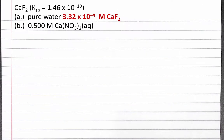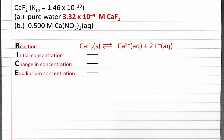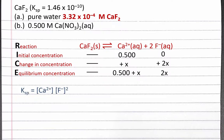Now let's look at how the molar solubility changes when we dissolve calcium fluoride into 0.500 molar calcium nitrate solution based on the common ion effect. We begin with the same RICE table setup, but this time we have an initial concentration of 0.5 molar calcium ions from the 0.500 molar calcium nitrate solution. We don't have any fluoride ions to begin with, so our reaction quotient Q will still be 0, and we will still shift to the right to reach equilibrium. So the change will still be plus x for calcium ions and plus 2x for fluoride ions.